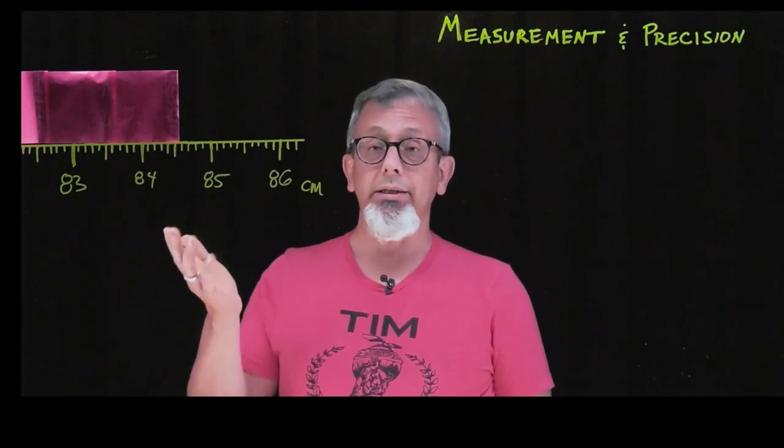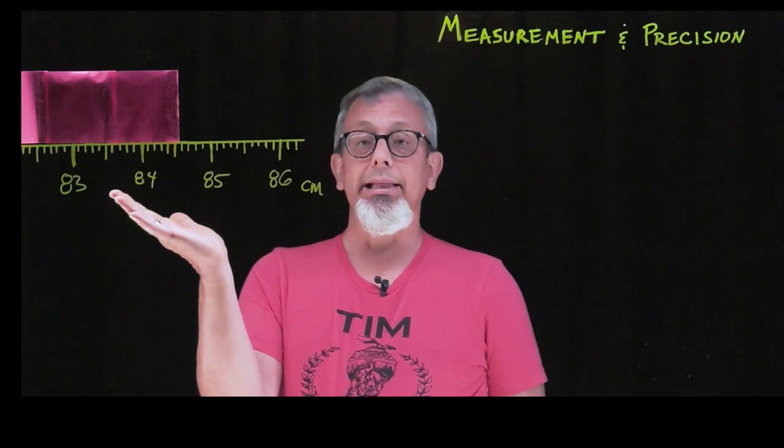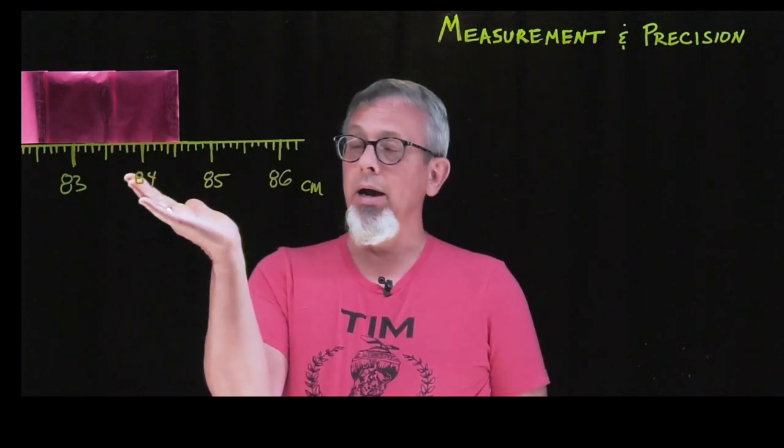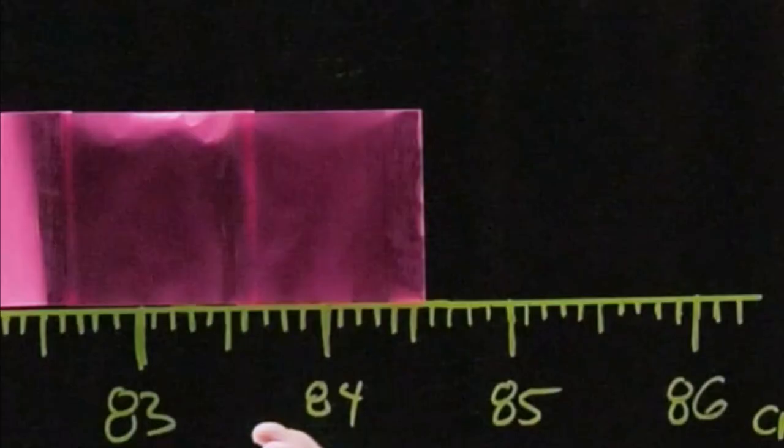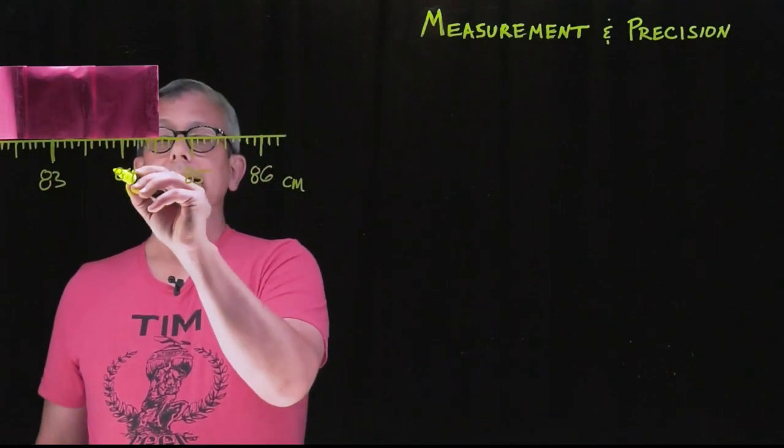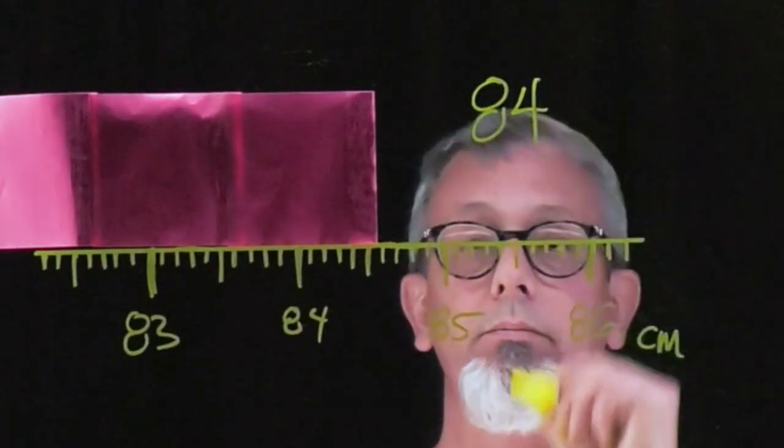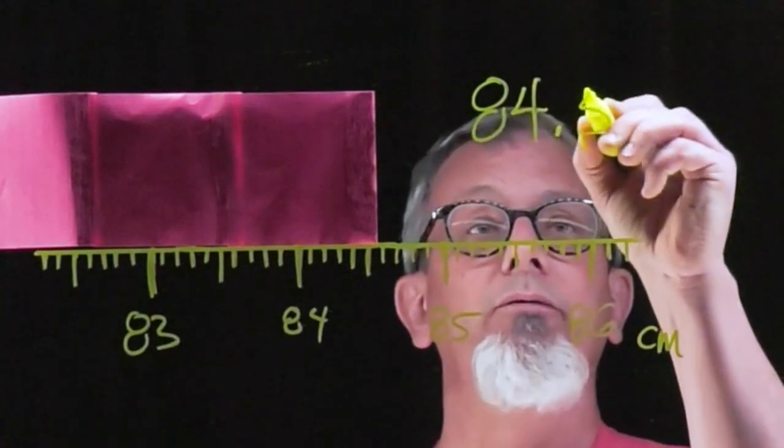So let's practice. Here's another example. Take a look at this length measurement and give me a number value that you think is appropriate. So looking at it carefully, I look there, I see 84 and 85. So I'm going to record 84. And then it looks like we've gone past the 0.5.